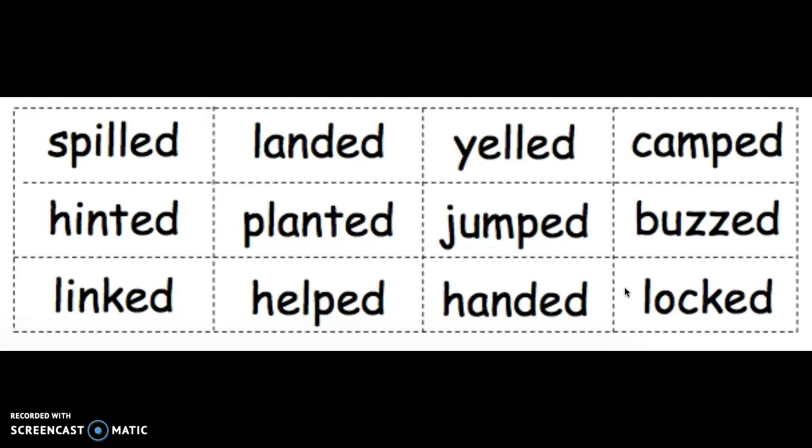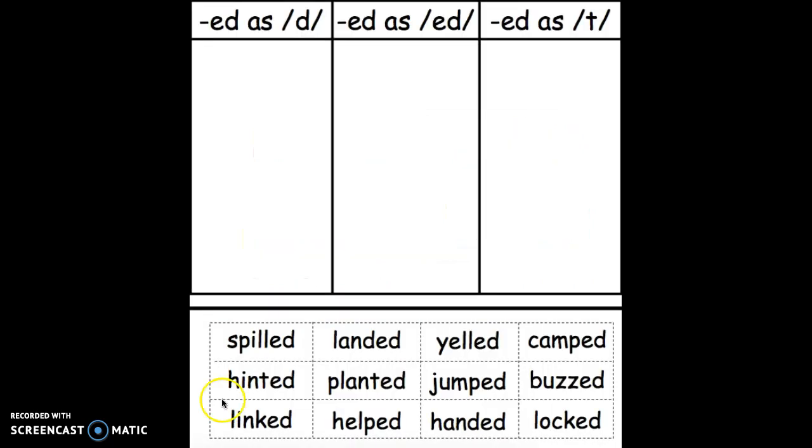Next you're going to cut out each piece and glue the words into the right group. If your word makes this sound at the end, /d/, glue it here.